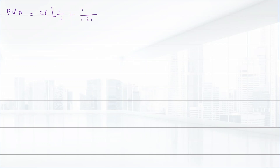We have to calculate the interest rate. n is the number of periods — the loan term is one year and compounding frequency is monthly, so the number of payments is 12. The cash flow is one thousand nine hundred fifty-one dollars and sixty-seven cents, and the present value is equal to twenty thousand dollars. We cannot solve this equation directly for i, so we need to solve it using a financial calculator, a spreadsheet, or by trial and error method. We have applied the trial and error method.